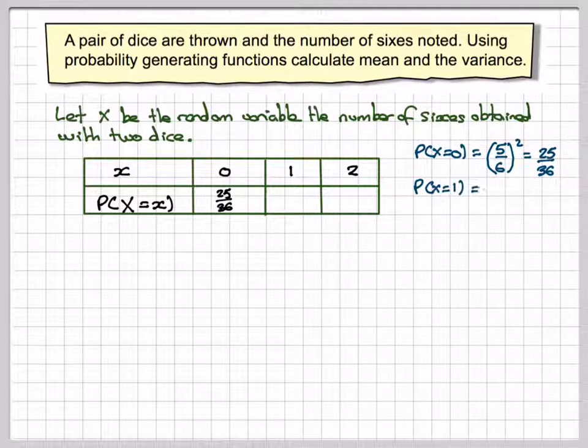The probability of X is equal to 1, well that's 1/6 times 5/6, but also you can have 5/6 times 1/6. So it's 2 times 1/6 times 5/6, which is 10 out of 36.